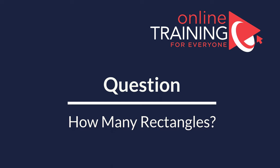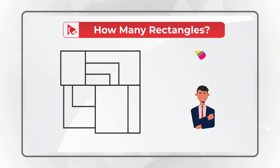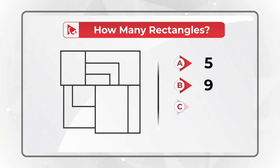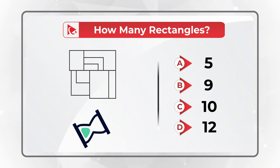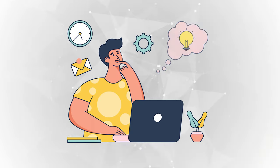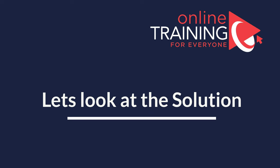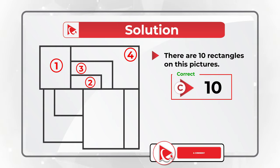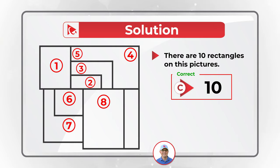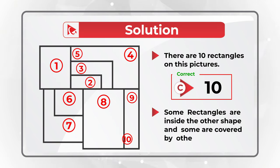Here's an amazing question to test your analytical brain power. You're presented with a shape and need to determine how many rectangles are part of it. The choices are: A) 5, B) 9, C) 10, and D) 12. I counted 10 rectangles in the picture — let me show them all: 1, 2, 3, 4, 5, 6, 7, 8, 9, and 10. The tricky part is that some rectangles are inside other shapes, and some are covered by other shapes.